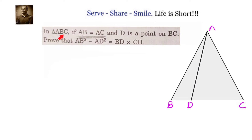In triangle ABC, if AB equals AC and D is a point on BC, prove that AB squared minus AD squared equals BD into CD.